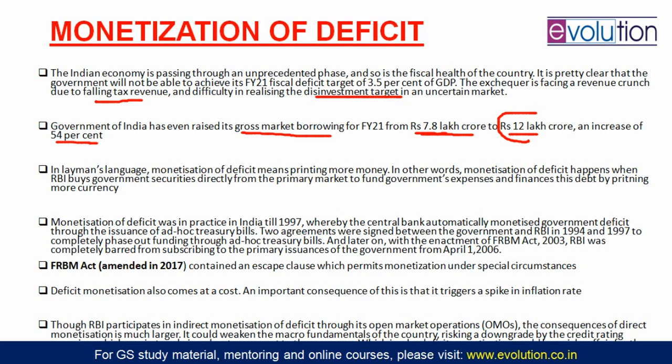Various economists are now suggesting that since the government has done a lot of market borrowing, it should go for monetization of deficit. In fact, previous RBI Governor C. Rangarajan has suggested that India should monetize its deficit. In layman's language, it simply means the RBI will print more money and give it to the government.